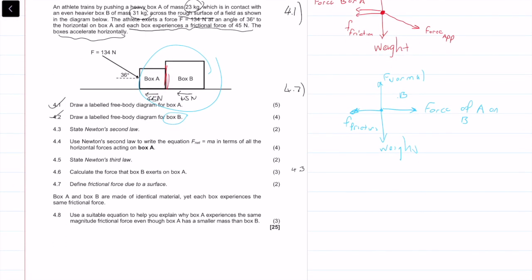Then we have a definition. It says state Newton's second law. Newton's second law says that when a net force acts on an object, the object accelerates in the direction of the net force. The acceleration is directly proportional to the net force and inversely proportional to the mass of the object. Basically, what's important from that is that we get that F_net is equal to ma. We get two marks for that definition.